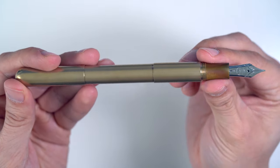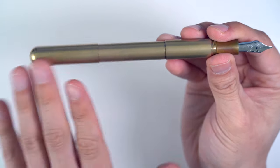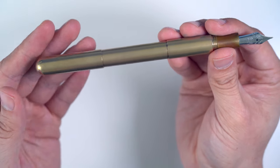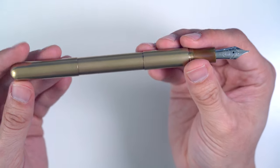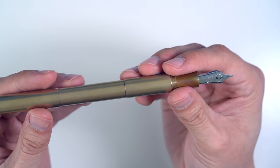Now, if you notice, the grip section here is brass, and it looks a little bit different because it's patinaed. And actually, when I first got this pen, it was quite a bit more shiny than it currently is. And I think the appeal of brass is that it patinas, and it has a nice weight to it as well.